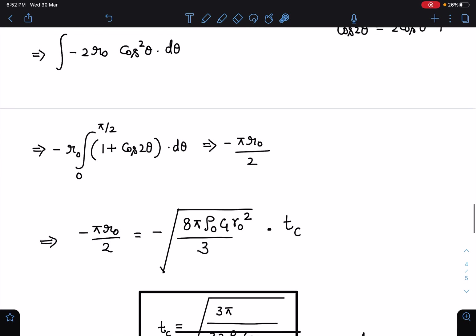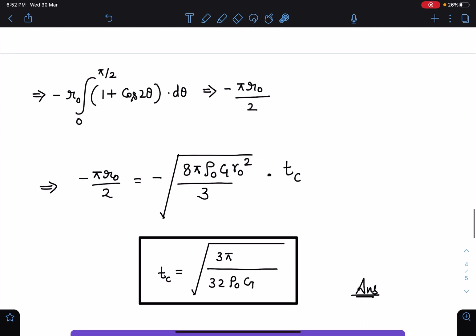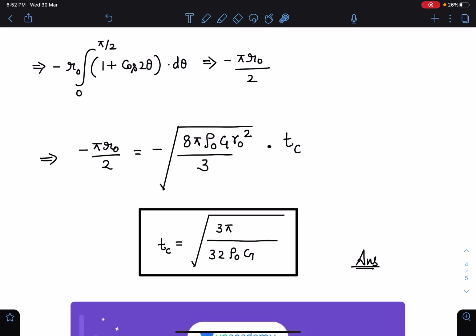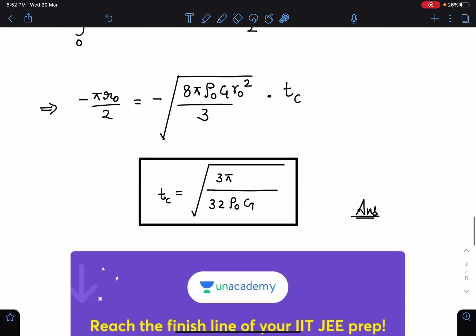When I substitute and simplify, r0 gets cancelled and time of collapse I am getting as √(3π/32ρ0G). This is the final answer and the best part is it does not depend on the size of the sphere or the size of the cloud. That is what we got from dimensional analysis also.